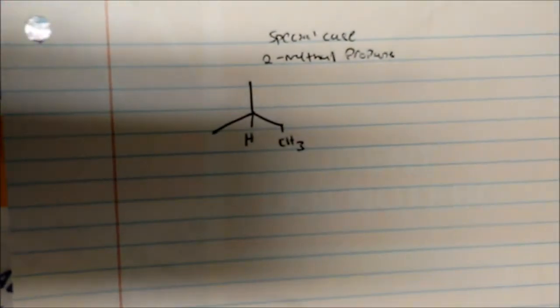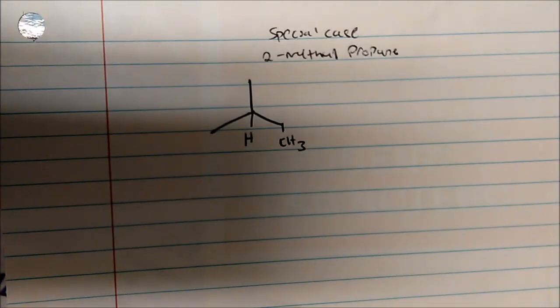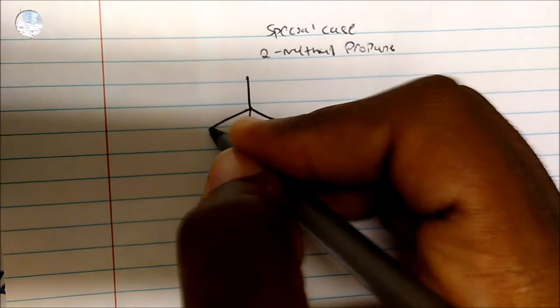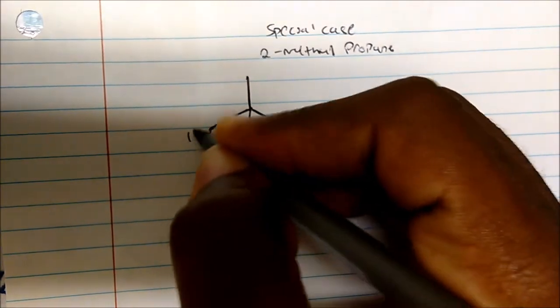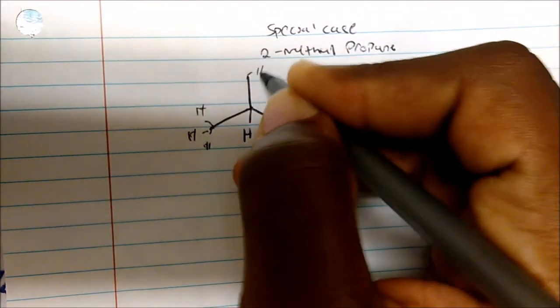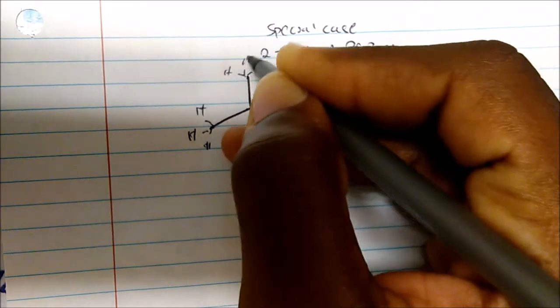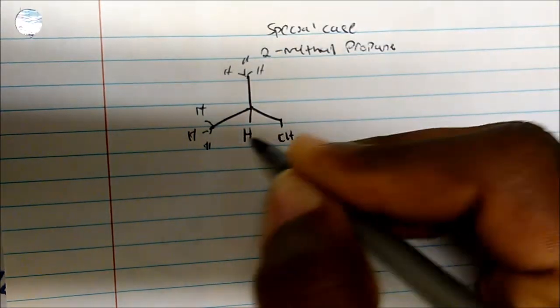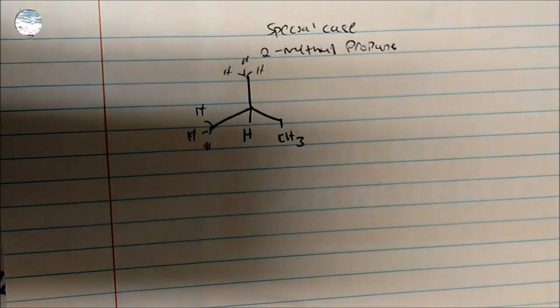First of all, how many peaks should I see in this molecule? How many peaks on the NMR spectrum should I see? Should I see these three protons splitting, these three here also, these three here also, and this? So should I see four peaks?